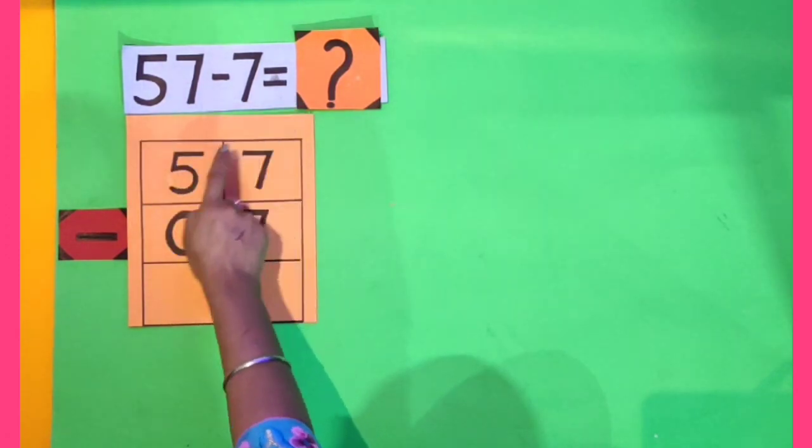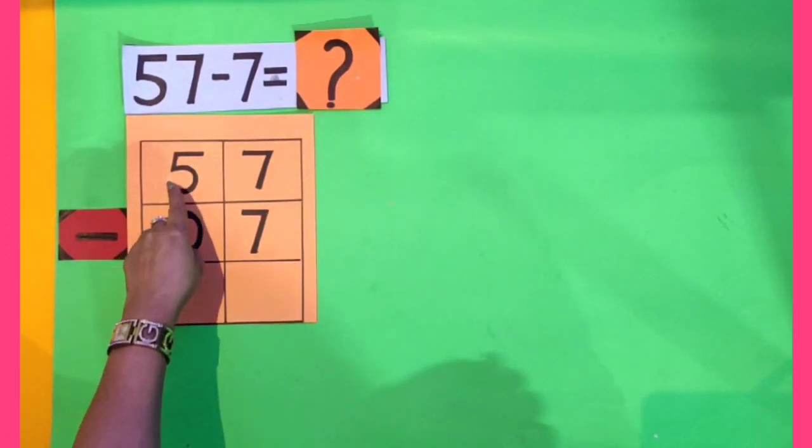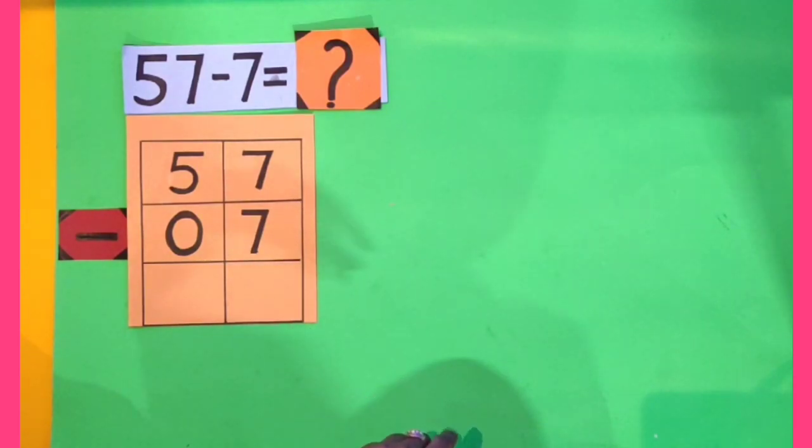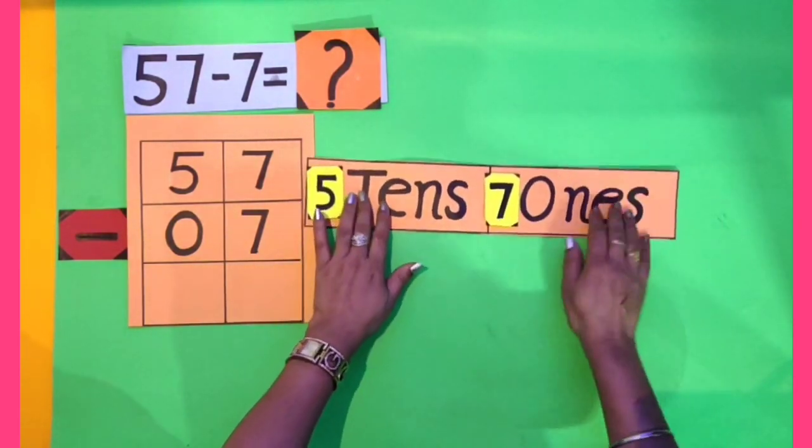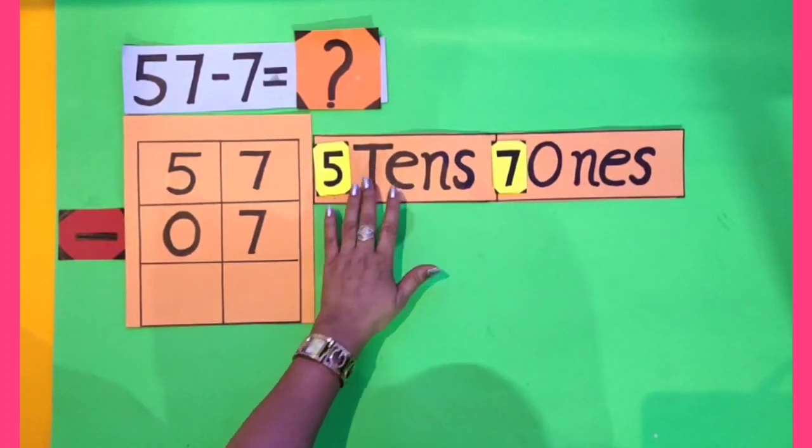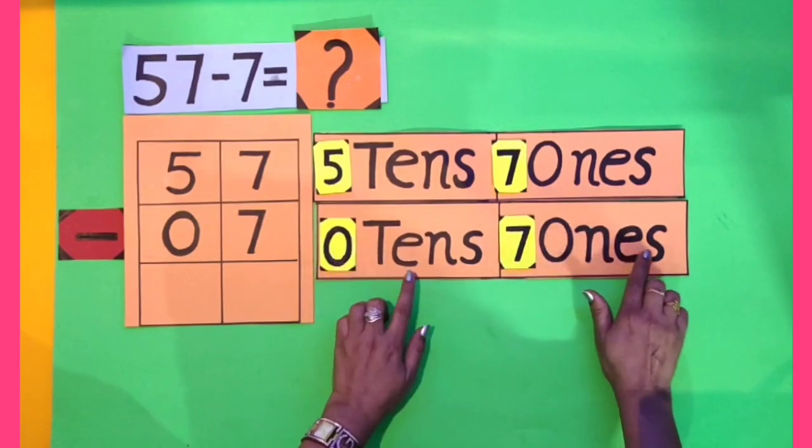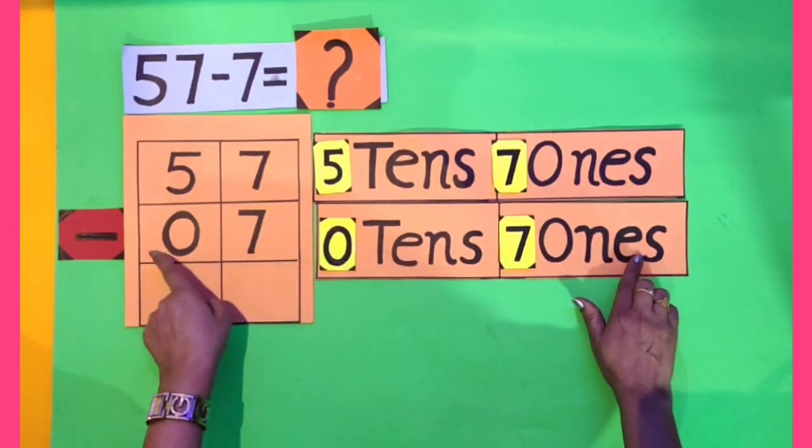For that, I have written all the digits in these boxes. Now dear kids, 57 means 7 ones and 5 tens. 7 means 7 ones and 0 tens.